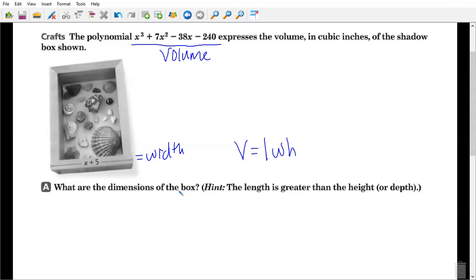It wants to know what are the dimensions of the box. So if I have my width and my volume, what operation can I use to find my length and my height? I have multiplying. So the opposite of multiplying is division, right? So I'm going to use division.